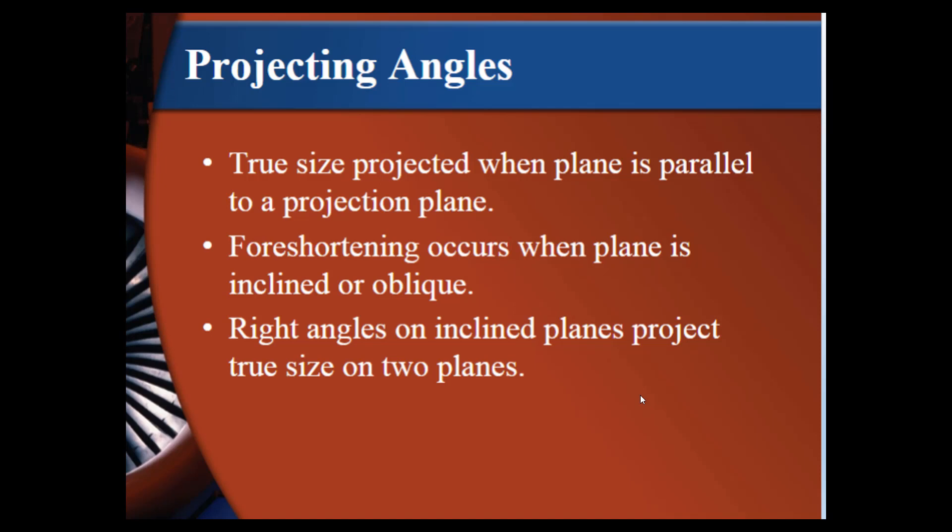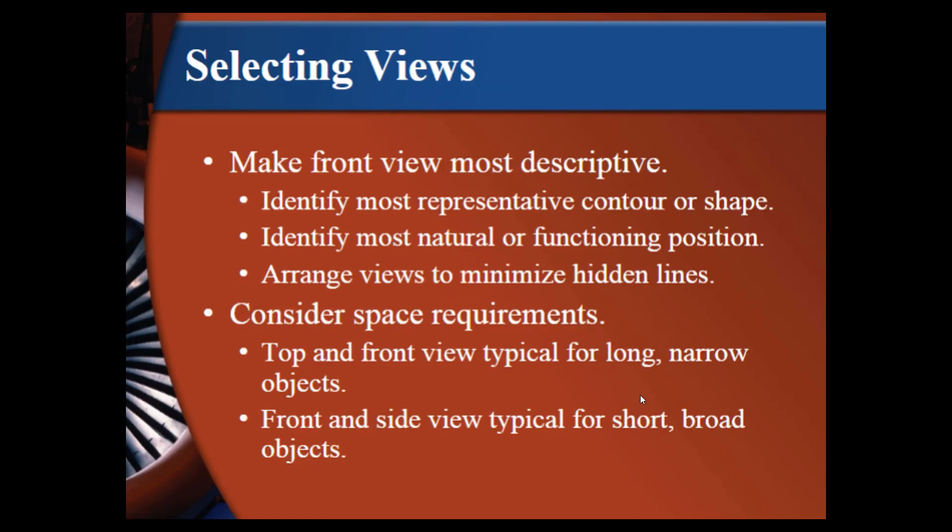The next thing we have to do, we have to decide what is the best view and which direction for our part or our piece to make it the most descriptive. Typically, we want the front view to have the most detail in it. We want it to identify contour and shape. We want it to identify natural and functioning position. We want to arrange the views to minimize hidden lines. So that's the first way we're going to look at our object is to take that into consideration. If it is a part that is normally a certain direction when it goes into place, that's probably going to be your front view. But one of the most important things is we want to minimize hidden lines.